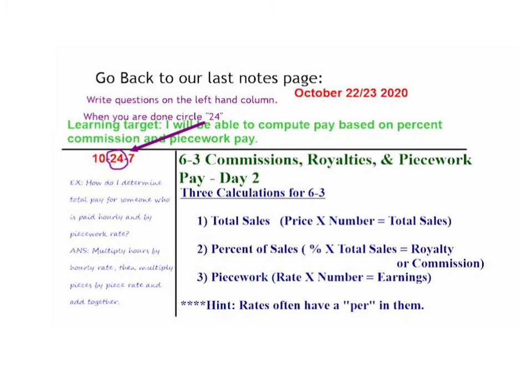Let's go back to our last notes page. That would be October 22nd, 23rd, Day 2 of 6-3, Commissions and Royalties. Let's write down a question in our left-hand column. The example I have here is: how do I determine total pay for someone who was paid hourly and by a piecework rate? You just multiply the hours by the hourly rate, then multiply the pieces by the piece rate, and add them together.